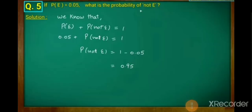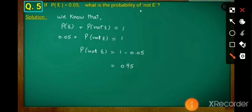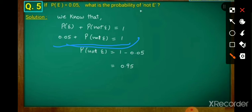So here we know that P(E) + P(not E) = 1. P(E) aur P(not E) dono ka plus kya hota hai — 1. So 0.05 + P(not E) = 1. We will transpose 0.05 to the right-hand side — yahaan par plus mein hai toh minus ho jaega. So P(not E) = 1 − 0.05, and we will get 0.95 as our answer. The probability of not E is 0.95.